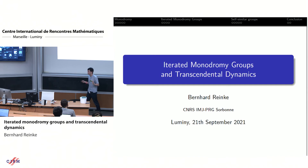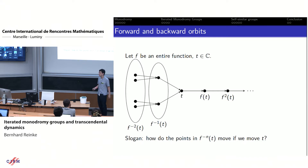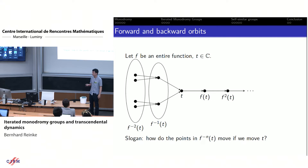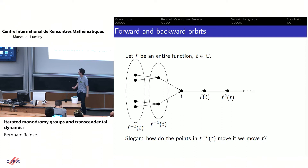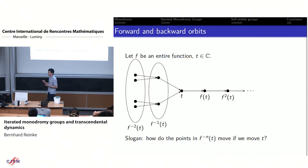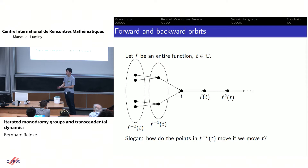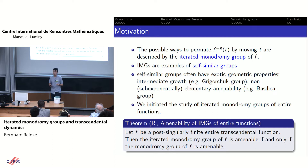Today I want to talk about iterated monodromy groups and transcendental dynamics, which was also the title of my thesis. What I will be focusing on is how points in a backward orbit of a point move. If we have f, an entire function, and some base point t, we can look at its forward orbit but also its backwards orbit. The basic slogan behind iterated monodromy groups is how points in a backwards orbit move if we move around a base point around the set. The possible ways to permute the backwards orbit can be described by the iterated monodromy group.